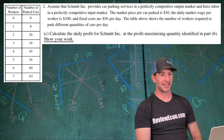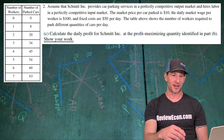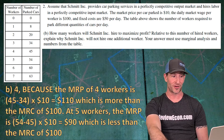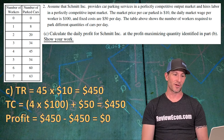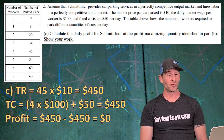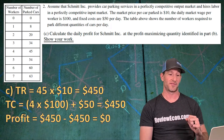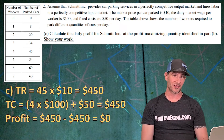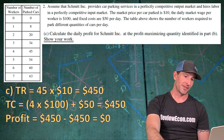Calculate the daily profit for Schmidt Inc. at the profit-maximizing quantity from part B. With four workers producing 45 parked cars: total revenue is 45 times $10 equals $450. Total cost is (4 workers times $100) plus $50 fixed cost equals $450. Total revenue minus total cost gives an economic profit of zero.